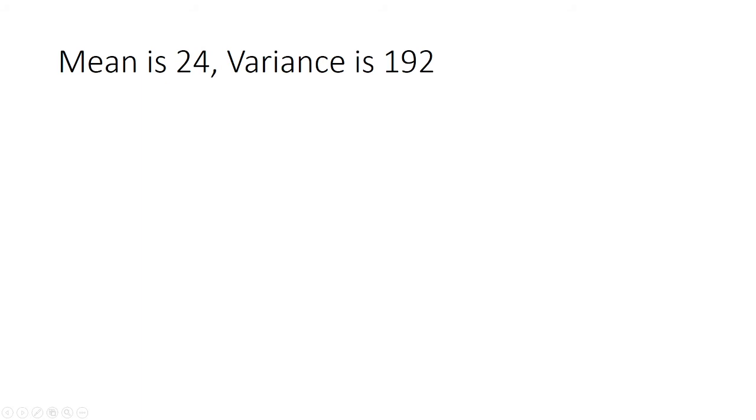In this video, we'll be looking at gamma distribution examples. We're given that the mean is 24 and the variance is 192.